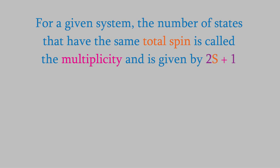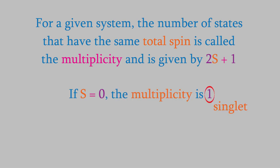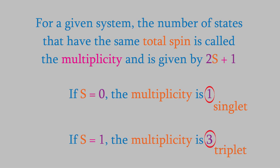The number of states that can have a particular value of capital S is called the multiplicity. The multiplicity of a system is given by the formula 2S plus 1. So if the total spin angular momentum is zero, the multiplicity is 2 times 0 plus 1, or 1, which is known as a singlet. If the total spin is 1, then the multiplicity equals 3, which is called a triplet. Other values of capital S can result in doublets or quartets, and so on.